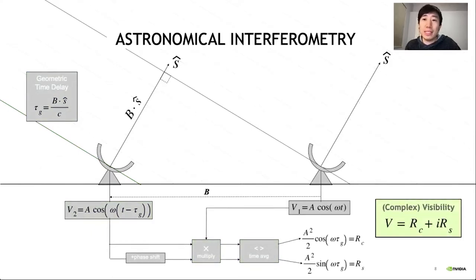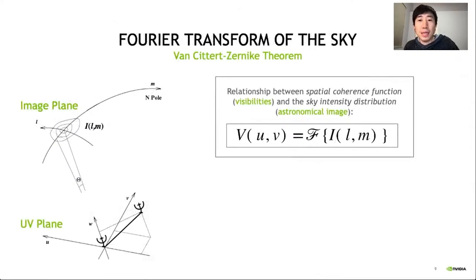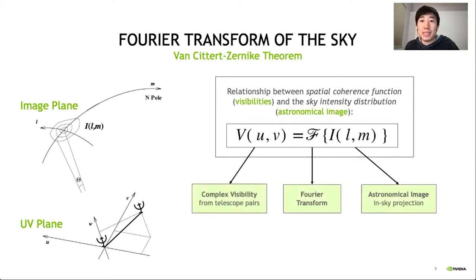The key point here is that each baseline between two antennas gives us one measurement v which is a complex number. So how is this value relevant to astronomical imaging? The key to astronomical interferometry is the van Sittert-Zernicke theorem. This theorem states that the visibility space is actually the 2D Fourier transform of the astronomical image.